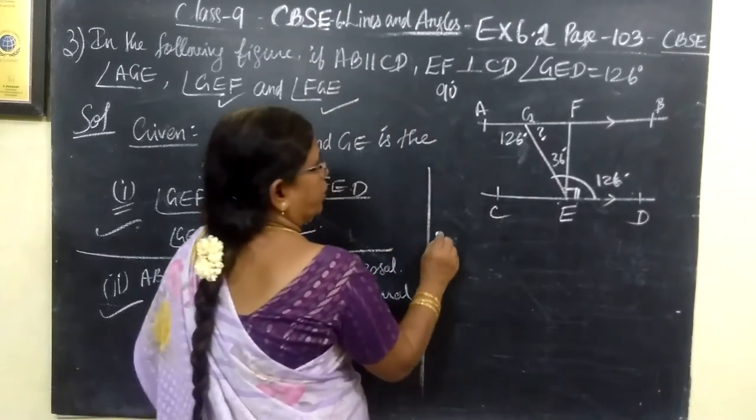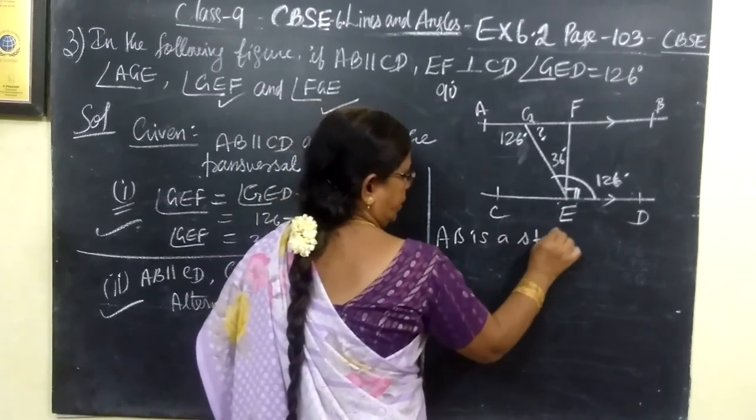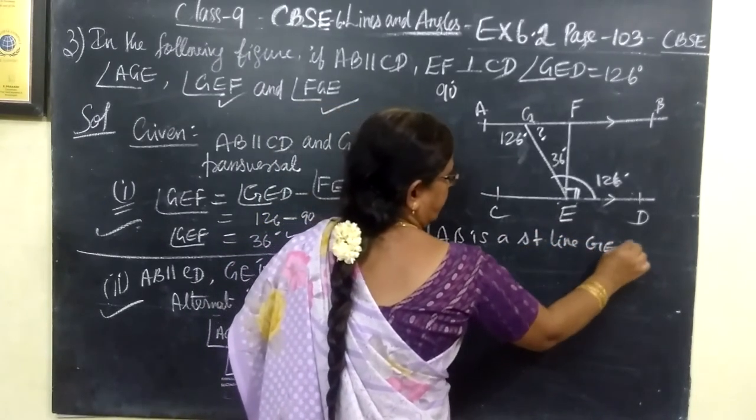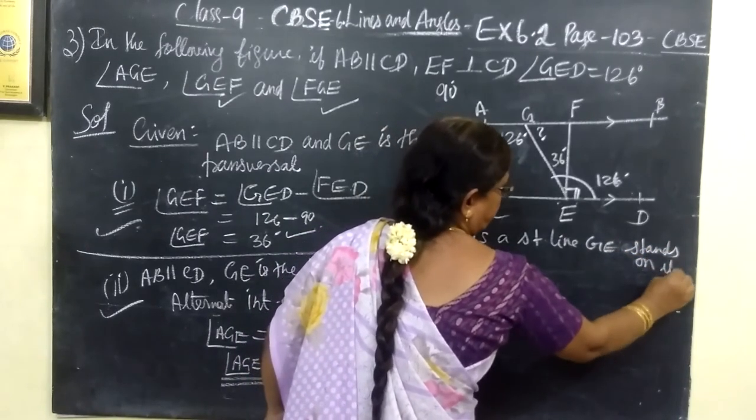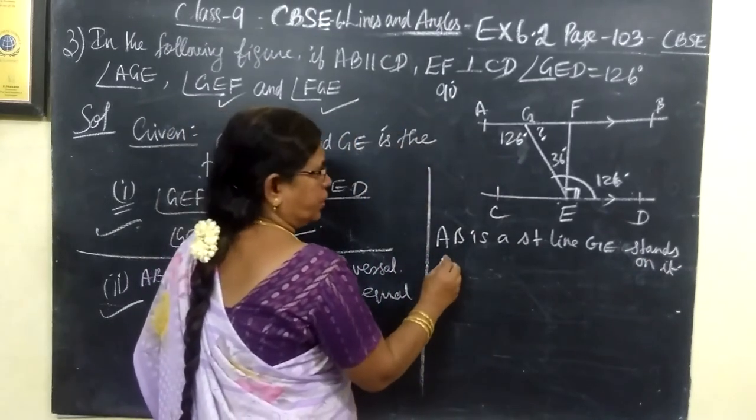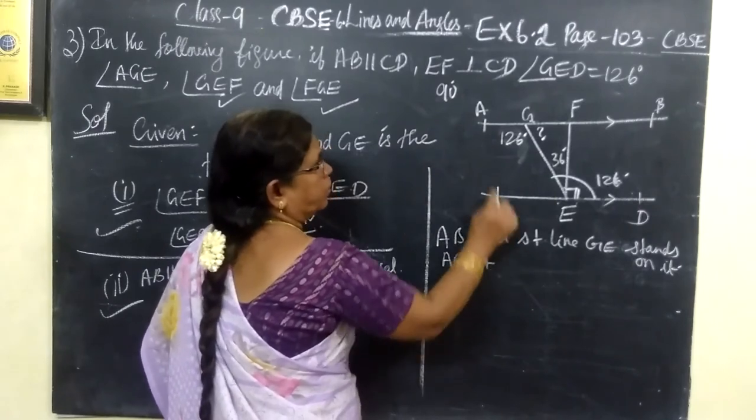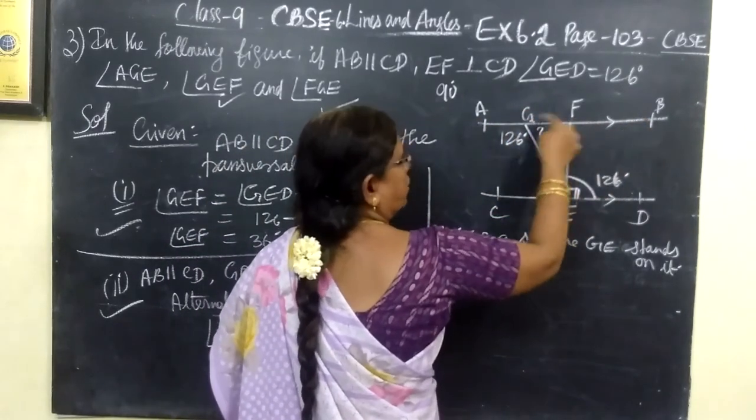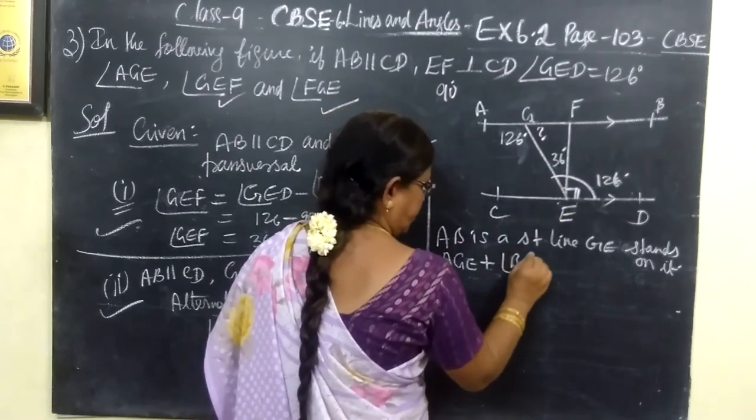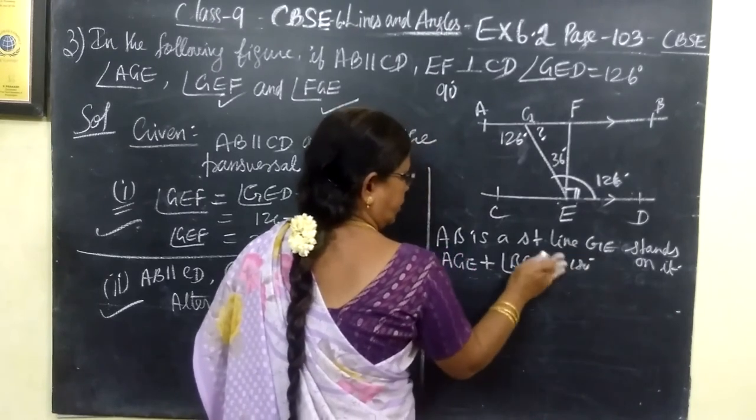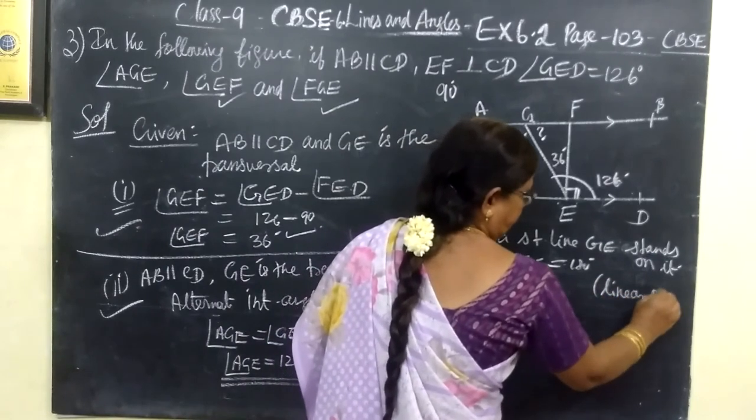So here you write: AB is a straight line, GE stands on it. Therefore, sum of the adjacent angles is 180 degrees. Therefore, AGE plus—or you can write it as—sorry, BGE equal to 180 degrees. What is the reason? Linear pair.